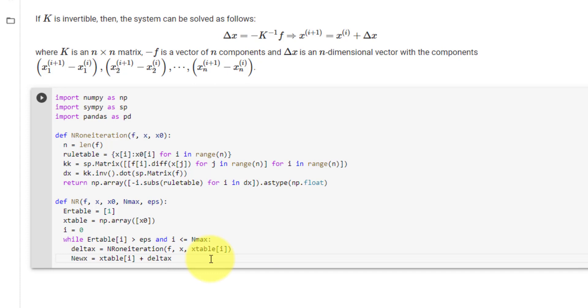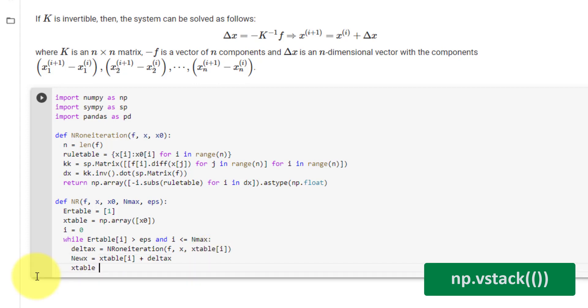Then we must append nu x to x table, but since x table is a numpy array, we must use vstack. x table equal to numpy dot vstack, two sets of round brackets, x table again, comma, nu x.